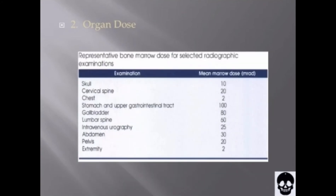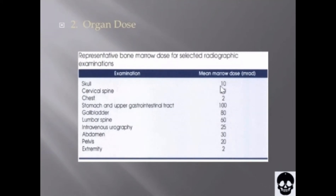Next is organ dose. Sometimes the radiation dose received by a specific organ or tissue is significant. Organ dose usually cannot be measured directly but must be estimated. One organ of particular concern is the bone marrow. Bone marrow dose is used to estimate the population's mean bone marrow dose as an index of the somatic effects of radiation exposure. Representative bone marrow doses for selected radiographic examinations include the skull at 10 millirad; cervical spine, chest, stomach, upper gastrointestinal tract, gallbladder, lumbar spine, intravenous urography, abdomen, pelvis, and extremity at 2 millirad.